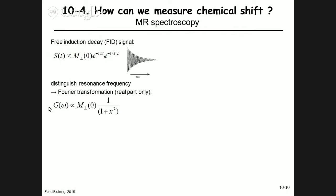We get a spectrum — a function g(ω) — which is proportional to the transverse magnetization at time zero times a Lorentzian function: 1/(1 + x²), where x = (ω − δ) × 2π × T2. This is what we call a Lorentzian line shape.